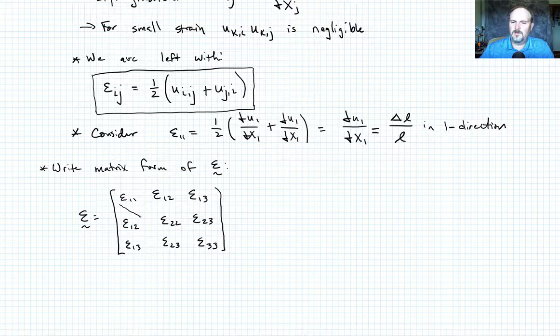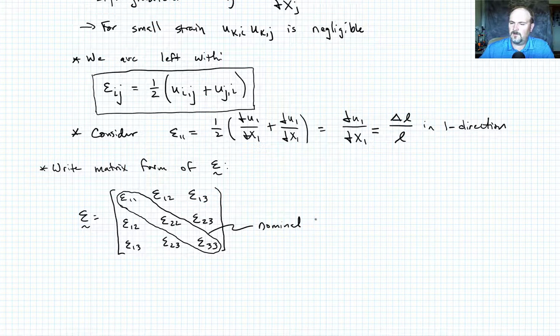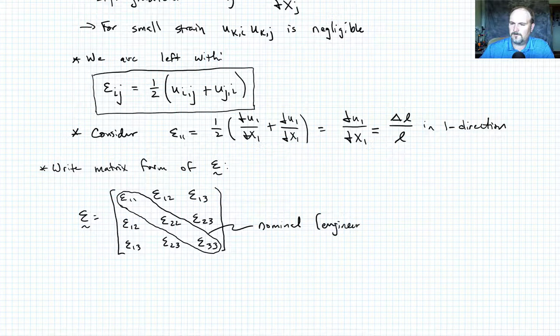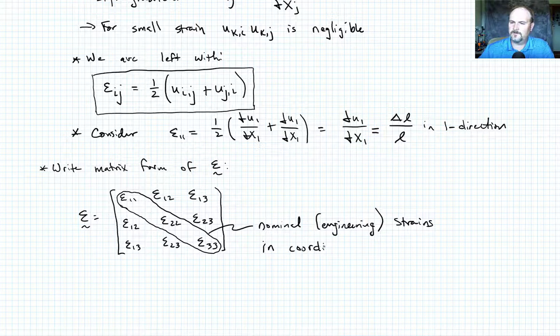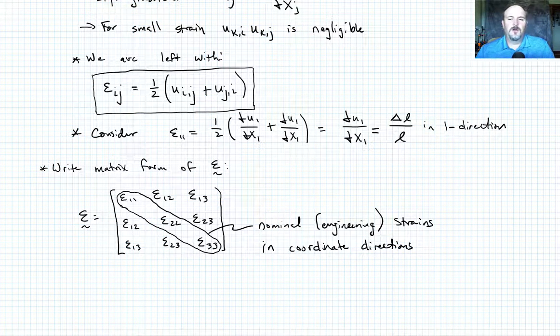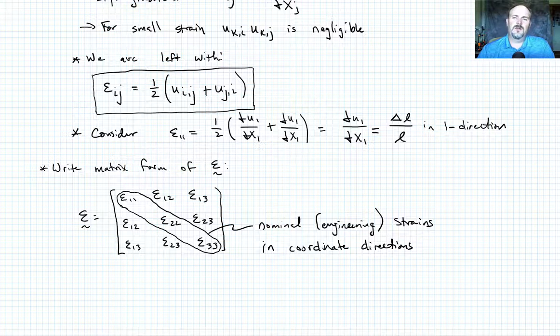And what we've shown is that these quantities, these represent nominal or engineering strains in the coordinate directions. And if you remember back several lectures ago, we talked about there's two ways to talk about deformation and deformation measures. One is to talk about a change in length, and that's what we focused on exclusively thus far. We've talked about delta L over L or stretch or something like that.